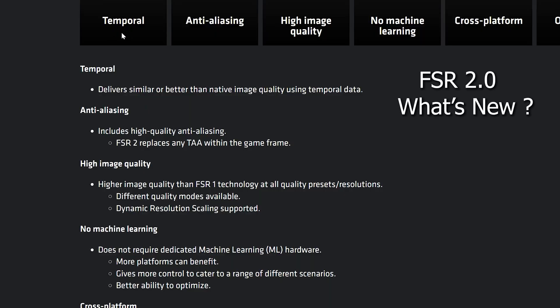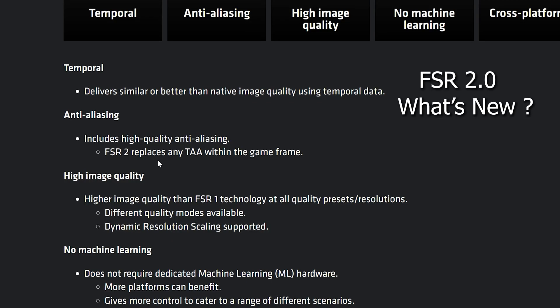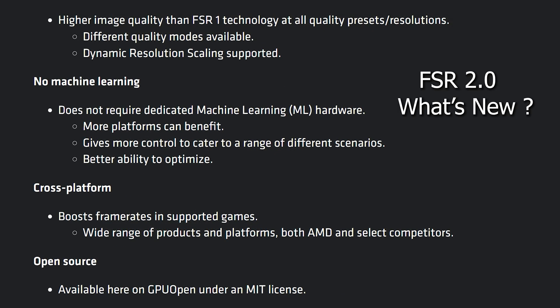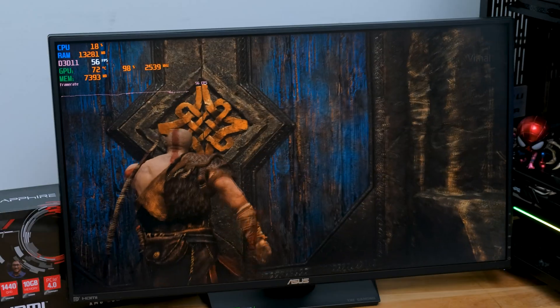Before we dive into the benchmarks, let me quickly tell you what's new in FSR 2.0. The main thing is the upscaling technology has moved from spatial upscaling to temporal upscaling, which delivers similar or better than native image quality using temporal data and algorithms. It definitely offers higher image quality compared to FSR 1, dynamic resolution scaling is also supported, and best of all it's not hardware dependent — it's cross-platform compatible and open source.